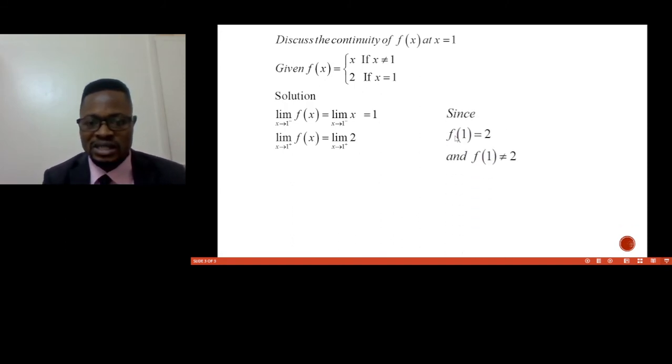Therefore, since f(1) is 2 because we're finding the limit as x approaches 1 from the positive, we can conclude that f(1) equals 2, and f(1) is not equal to 2. Why?